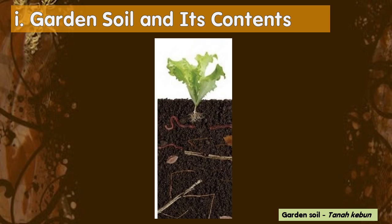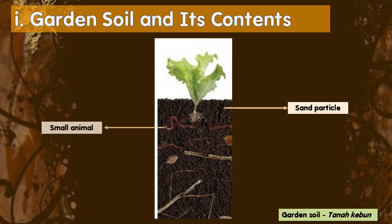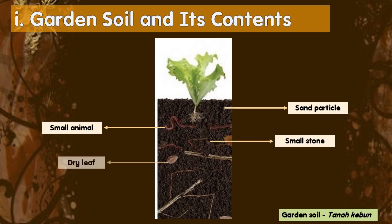Garden soil and its contents. Garden soil contains sand particles, small animals, small stones, dry leaves, and twigs. The small animals, dry leaves, and twigs will decay and form humus.